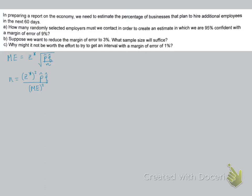It says, in preparing a report on the economy, we need to estimate the percentage of businesses that plan to hire additional employees in the next 60 days. How many randomly selected employers must we contact in order to create an estimate in which we are 95% confident with a margin of error of 9%?